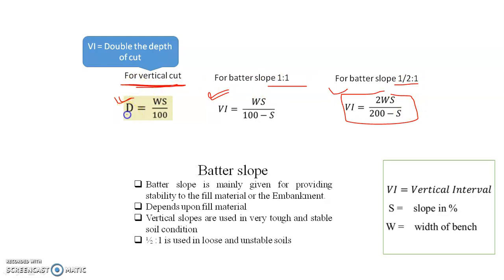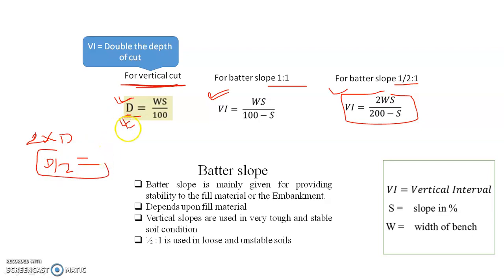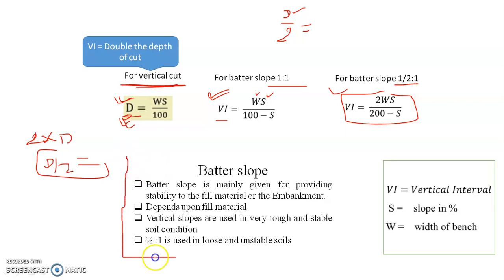d is also known as the vertical interval because that will be the drop. But vertical interval you need to calculate using the width and the slope. Remember: d/2 is depth of cut. If depth of cut is given in the question, then d will become 2 times depth of cut. The batter slope / riser slope formulas have been given — you can read them from here.